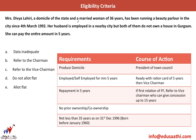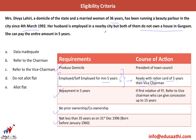Mrs. Divya Lahiri, a domicile of the state and a married woman of 36 years — domicile and age conditions are true. She has been running a beauty parlour in the city since 4th March 1992 — so condition B is not met since she has not been employed for a minimum of 5 years. Her husband is employed in a nearby city but both of them do not own a house in Gurgaon — condition D is okay. She can pay the entire amount in 5 years — condition C is okay. The only doubt is condition B. The course of action for this exception requires a ration card of 5 years, but nothing is mentioned about a ration card here. So the data is inadequate — we cannot say allot a flat or do not allot a flat.